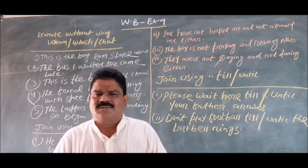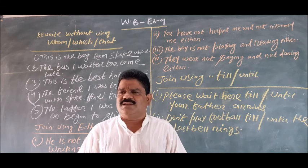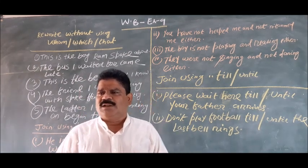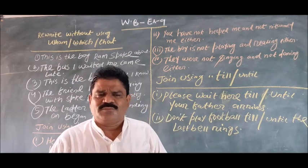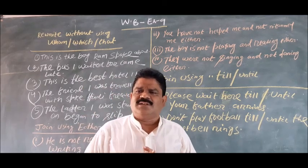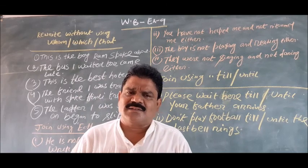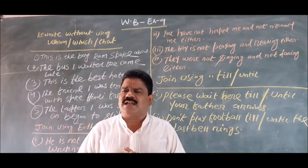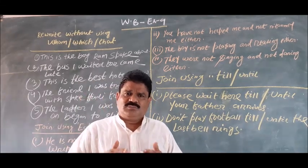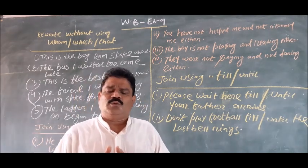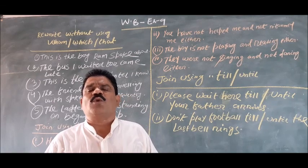The first question: 'This is the boy about whom Ram spoke.' When we remove the word whom, it will be written as: 'This is the boy Ram spoke about.' In the first sentence, we abolish the word whom, and the sentence becomes: 'This is the boy Ram spoke about.' The next question: 'The boss for which I waited came here.' Without which, it is written as: 'The boss I waited for came here.'